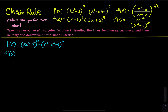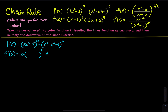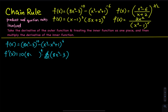So f prime of x is equal to — let's take care of the 10th power first. We bring the 10 down, and then whatever that is raised to the 10 minus 1, which is the 9th power. And then by chain rule, we have to take the derivative of the parenthesis, which is 8x squared minus 3, and then we put this in the other parenthesis as well.